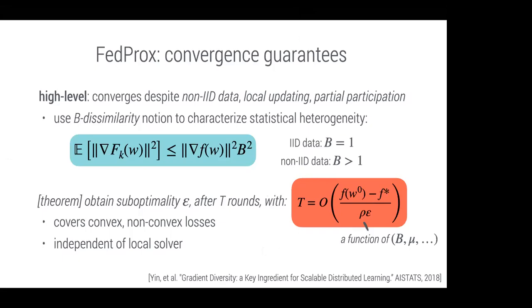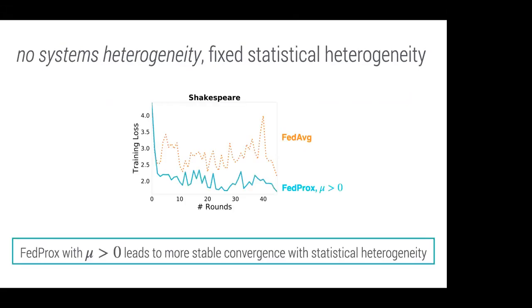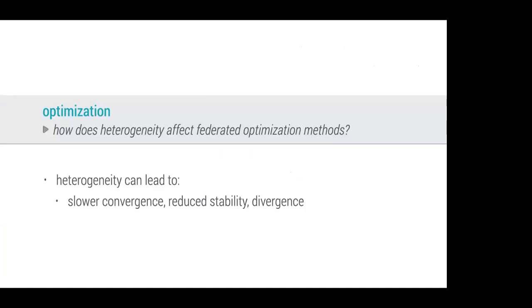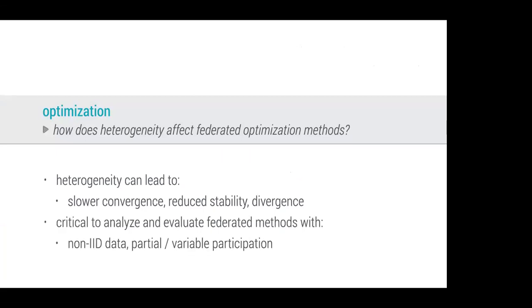To summarize the optimization section: heterogeneity is very important to consider when thinking about distributed optimization techniques for federated learning. It can lead to slower convergence, reduced stability, and divergence. It is therefore critical to analyze and evaluate federated methods with practical assumptions in mind — assuming data is non-IID and that there may be partial or variable participation from devices.